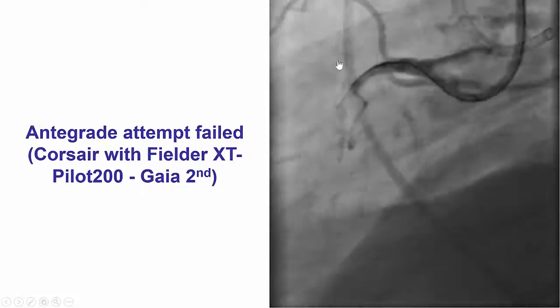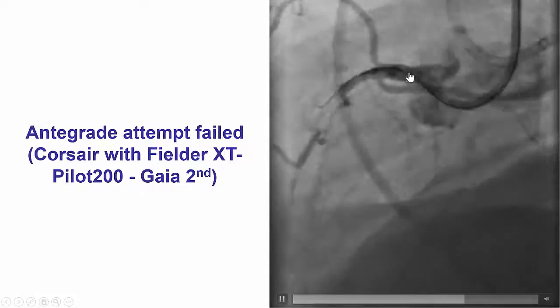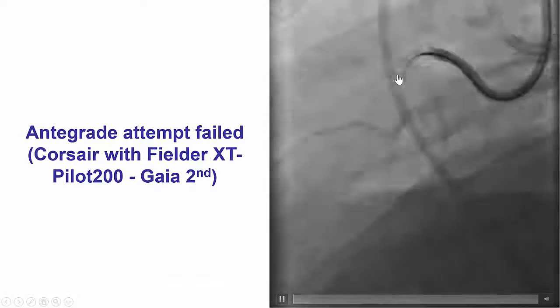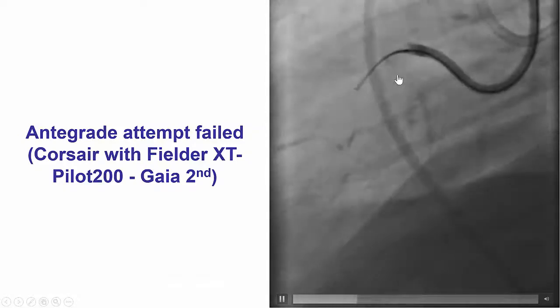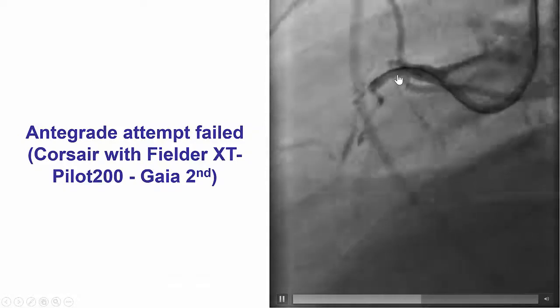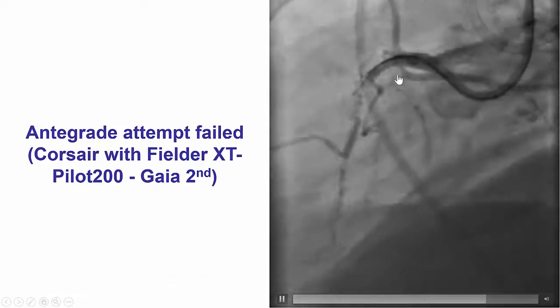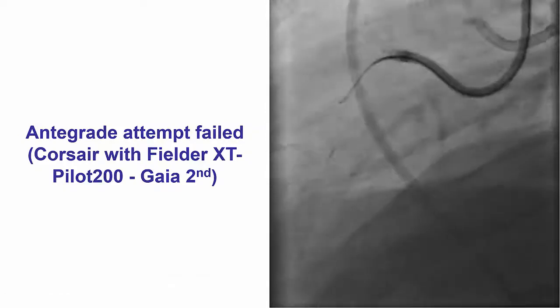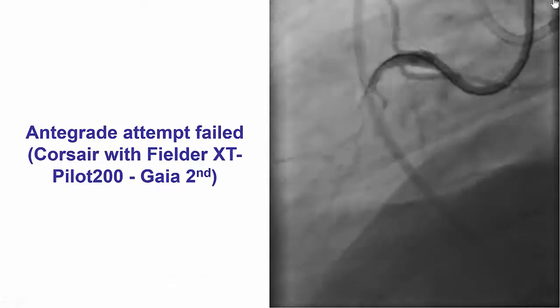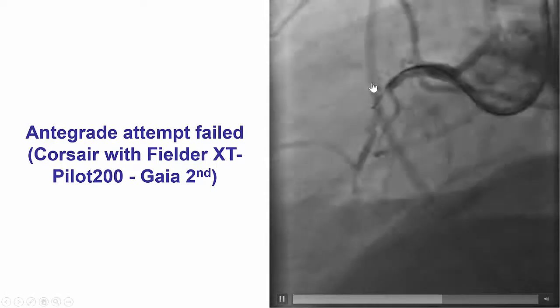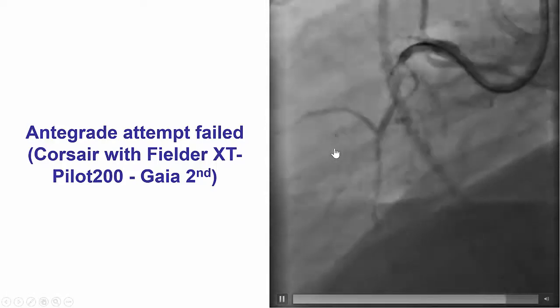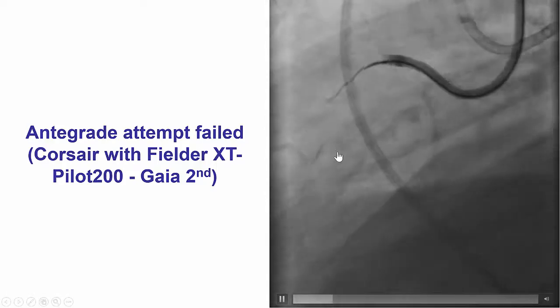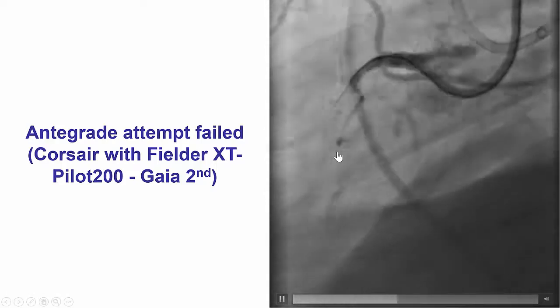We used a Corsair microcatheter and tried several guidewires — Filder XT, Pilot 200, and Gaia 2nd. However, they tended to enter into bridging collaterals and we were not able to achieve much success.